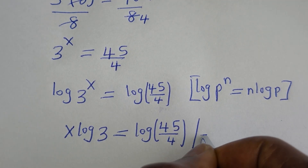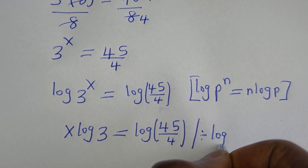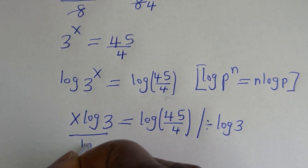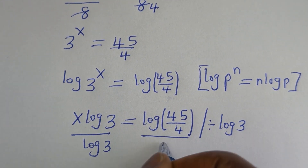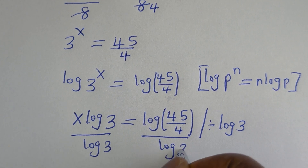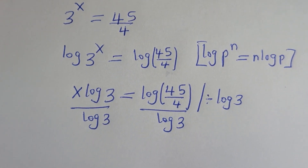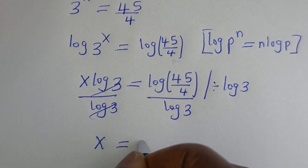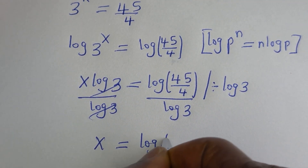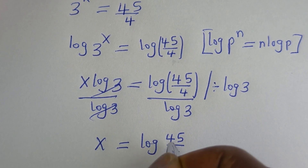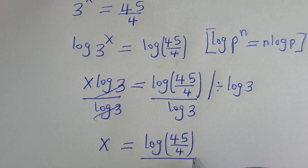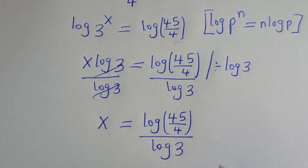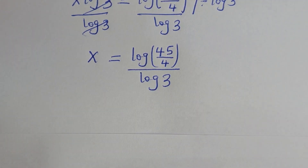Now let's divide both sides by log 3. This log 3 cancels, so S is equal to log 45 over 4, divided by log 3.